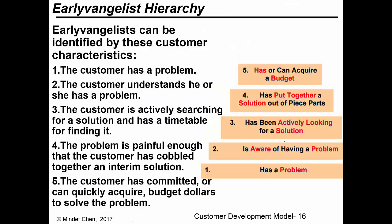To find early evangelists, there is a hierarchy to look for. You want to find people who not only have a problem but are aware they have a problem. Even better: they have been actively looking for a solution, and some have even put together a solution from existing pieces of technology. Best of all, they have or can allocate a budget to acquire a new solution — your product — to solve the problem. Those are the early evangelists you want to target.